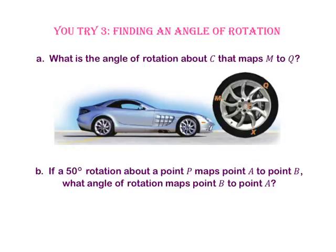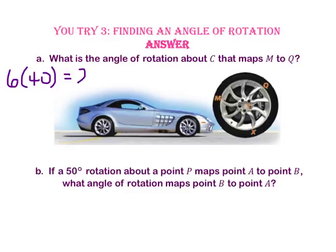Pause the video and do You Try number 3. Part A asks for the angle of rotation about point C that maps point M onto Q. Each set of spokes creates a 40 degree angle. Moving from point M to point Q is six spokes, so we do six times 40 degrees. The angle of rotation is 240 degrees.